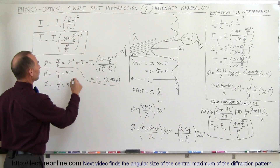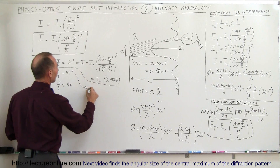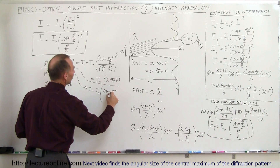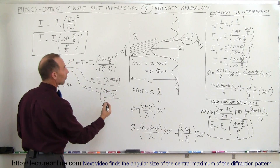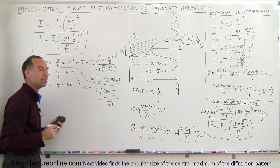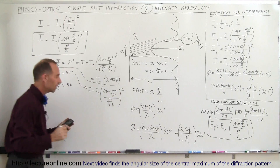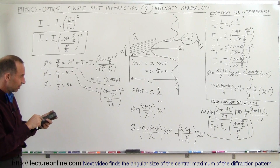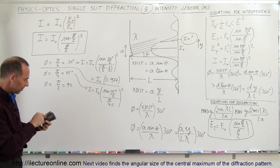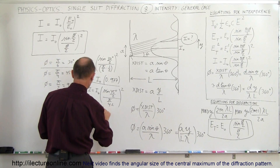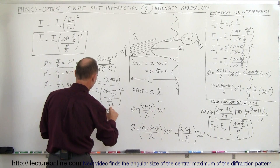If the phase angle is 45 degrees, then I equals I sub nought times the sine of 45 degrees divided by 2, divided by pi over 4 divided by 2 — that's pi divided by 8 in the denominator — the whole thing squared. Taking the sine of 22.5 degrees times 8 divided by pi, then squaring, we get 0.95. So I equals 0.95 I sub nought, which is a little less than at 30 degrees.